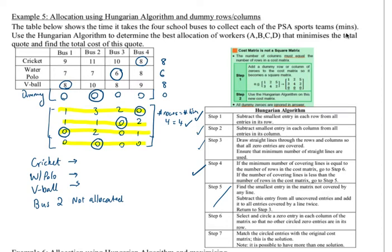Find the total time. Just a bit of a typo there, copying from the last question. So cricket is eight minutes, water polo is six, volleyball is eight, and the bus not allocated is zero. We sum them up: eight, 16, 24 minutes in total. And that's to minimize the total time.